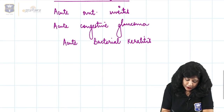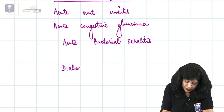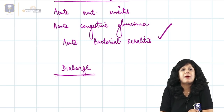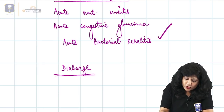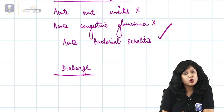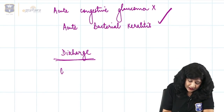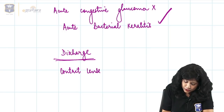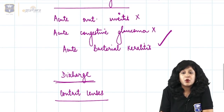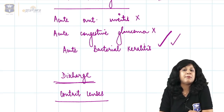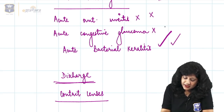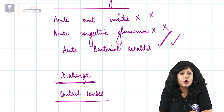The patient has a discharge — discharge favors bacterial keratitis. You do not get discharge in uveitis, and you do not get discharge in glaucoma. Second important point: the use of contact lenses again goes in favor of bacterial keratitis — not uveitis or glaucoma.